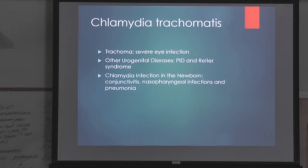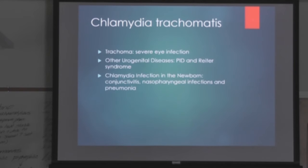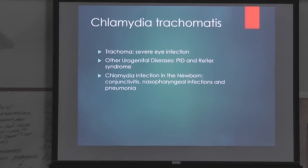Other urogenital diseases include PID — pelvic inflammatory disease — and Reiter's syndrome, which includes urethritis. You can have conjunctivitis and lesions which can cause infertility. There can also be a chlamydia infection in the newborn as well.